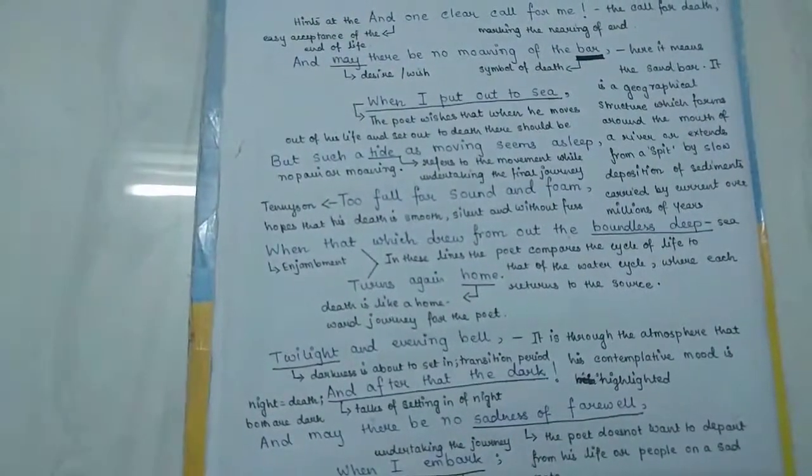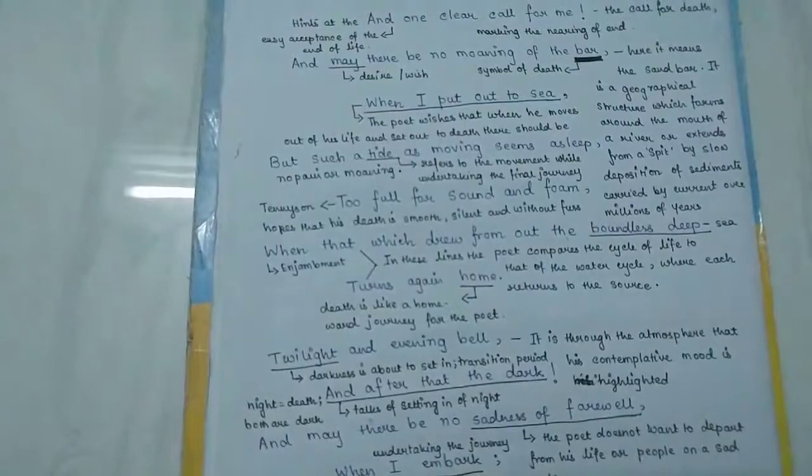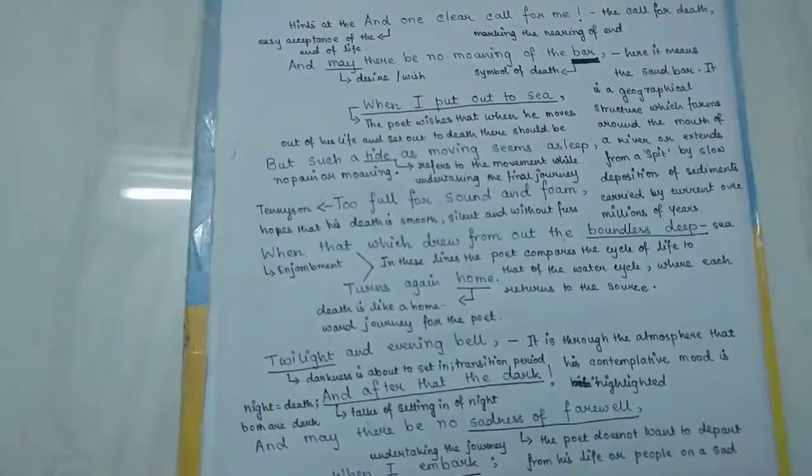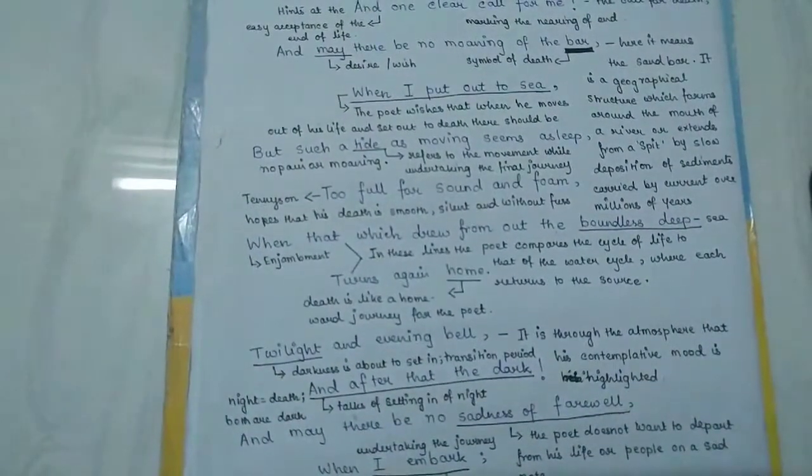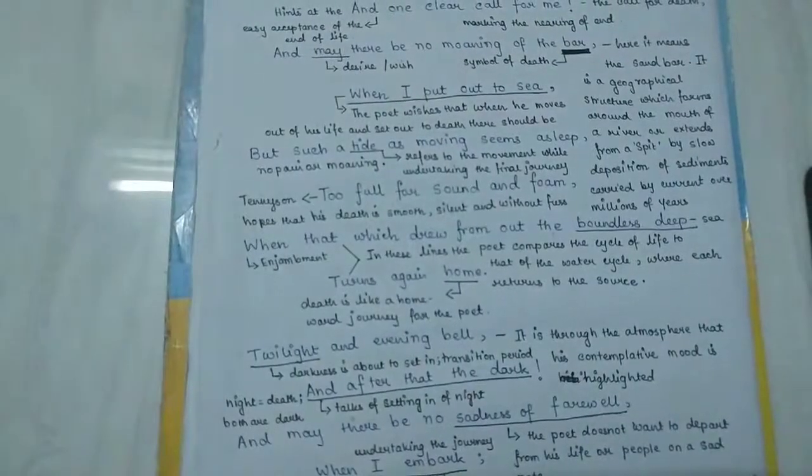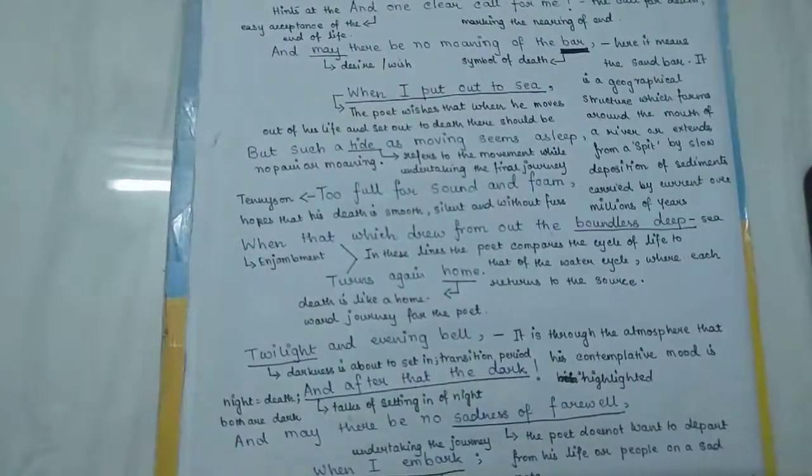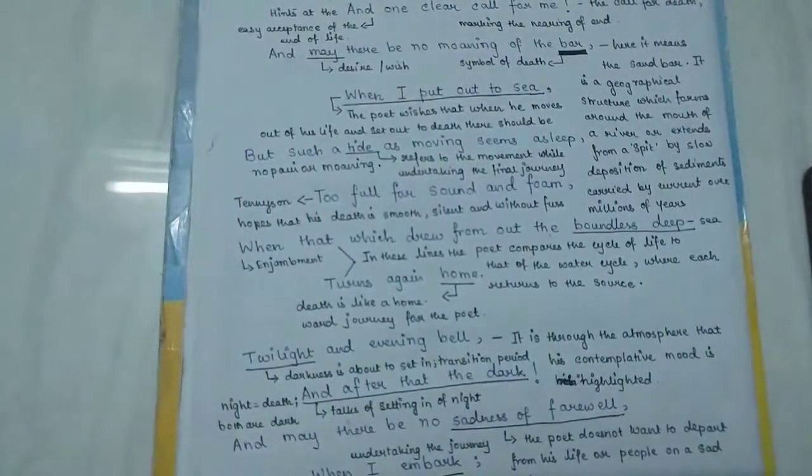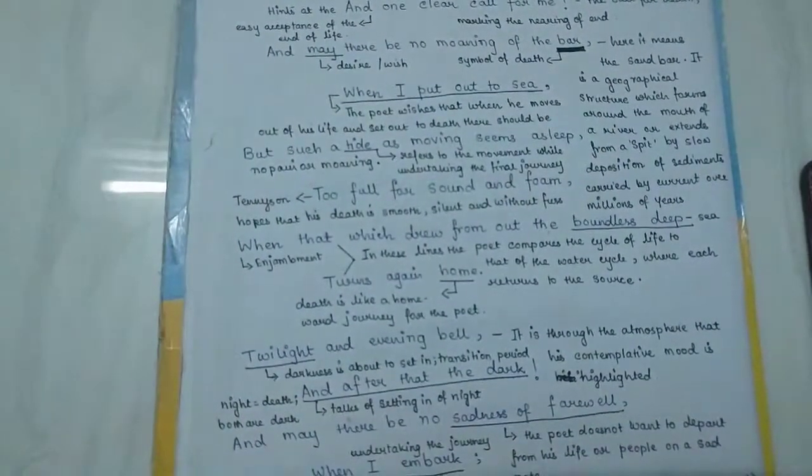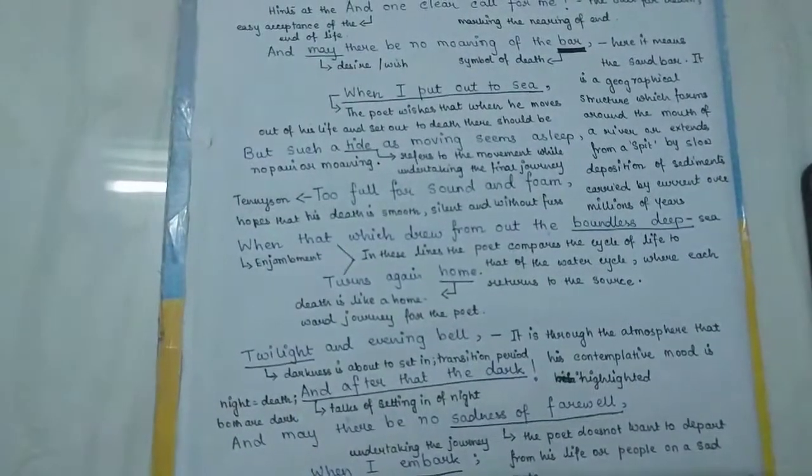In the next line, he is talking of the setting in of the night. With night there will be darkness. Most of us relate night and death to darkness because that is when our visibility is hindered. We are not able to see clearly at all. Without light, nothing is visible to us. And may there be no sadness of farewell.